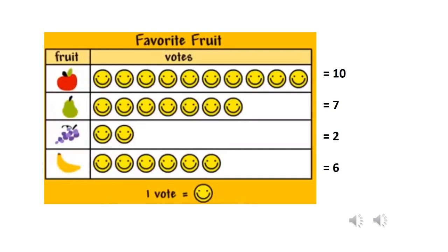Usually in picture graphs they show pictures of the items themselves — like ten apples, seven pears, two bunches of grapes, and six bananas. But they could use any picture, like thumbs up or a cat face. The important thing to understand is that whatever picture you use, in this graph one picture represents one person's vote. So if ten people voted for apples, that's why there are ten happy faces — one person, one vote, one happy face.